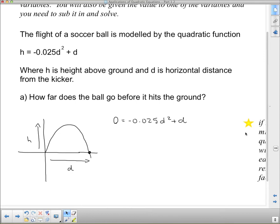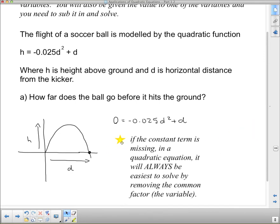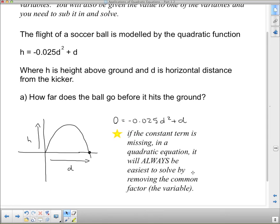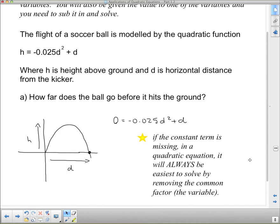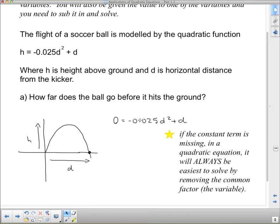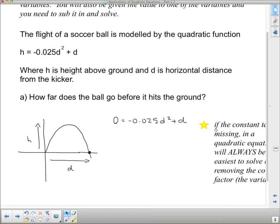Let's see what this little thing says over here. If the constant term is missing in the quadratic equation, it will always be easiest to solve by removing the common factor or the variable. Okay, which is the common factor. So it's going to be easiest to solve by removing the common factor.